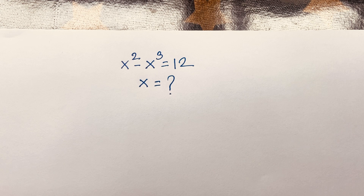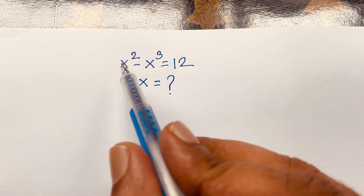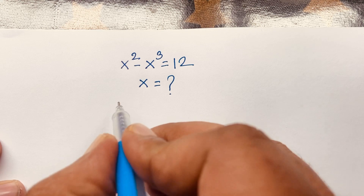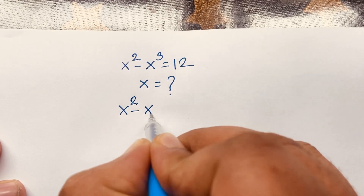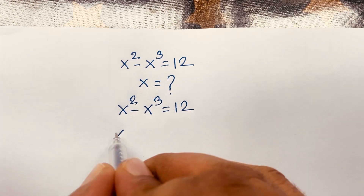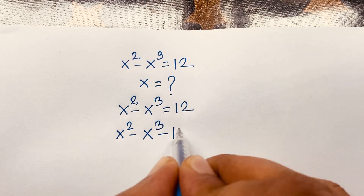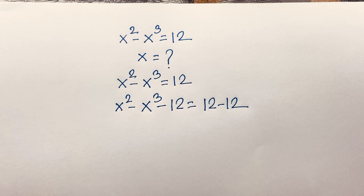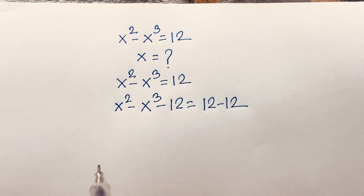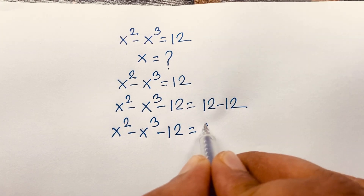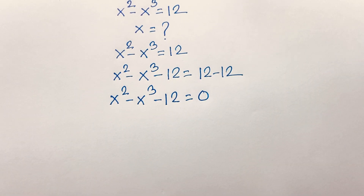How to solve this exponential equation — it is interesting math. First step, we move 12 to this side, so we get negative 12 here. Our equation is x squared minus x cubed equals 12. I subtract 12 from both sides, so it becomes x squared minus x cubed minus 12 equals 0.